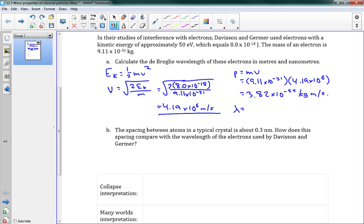Lambda is equal to h over p. We've got 6.63 times 10 to the negative 34 divided by 3.82 times 10 to the negative 24. That gives us a wavelength of 1.74 times 10 to the negative 10 meters. And we were asked for that in nanometers as well, which is 0.174 nanometers. There we go. There's our answer.